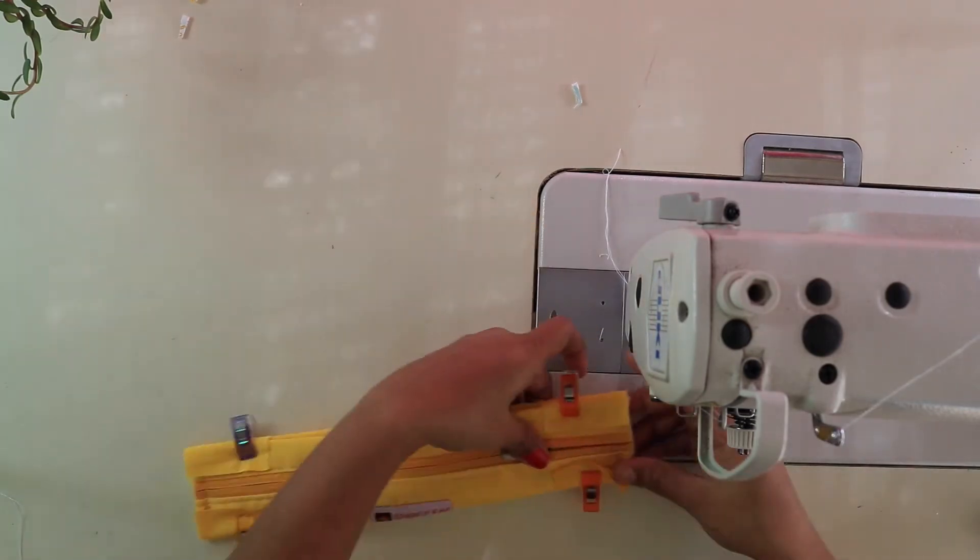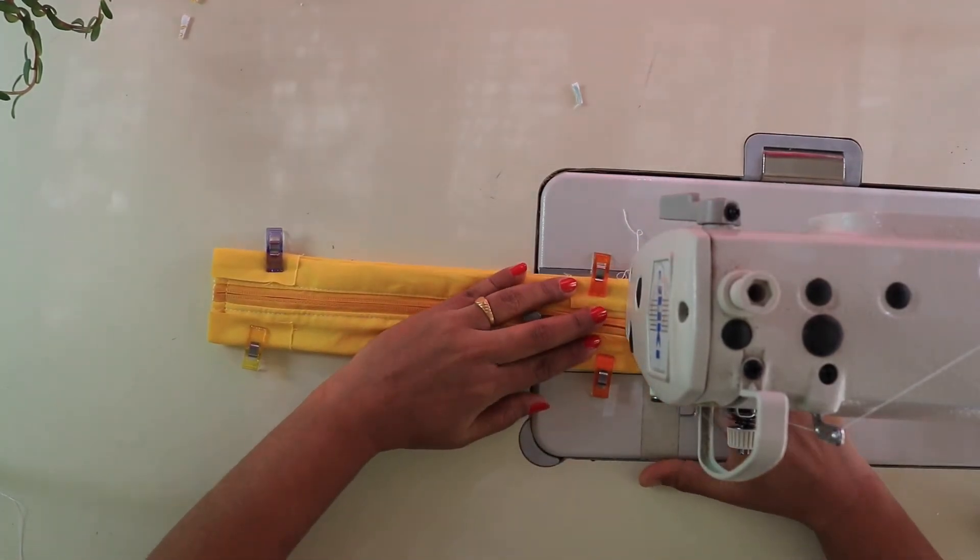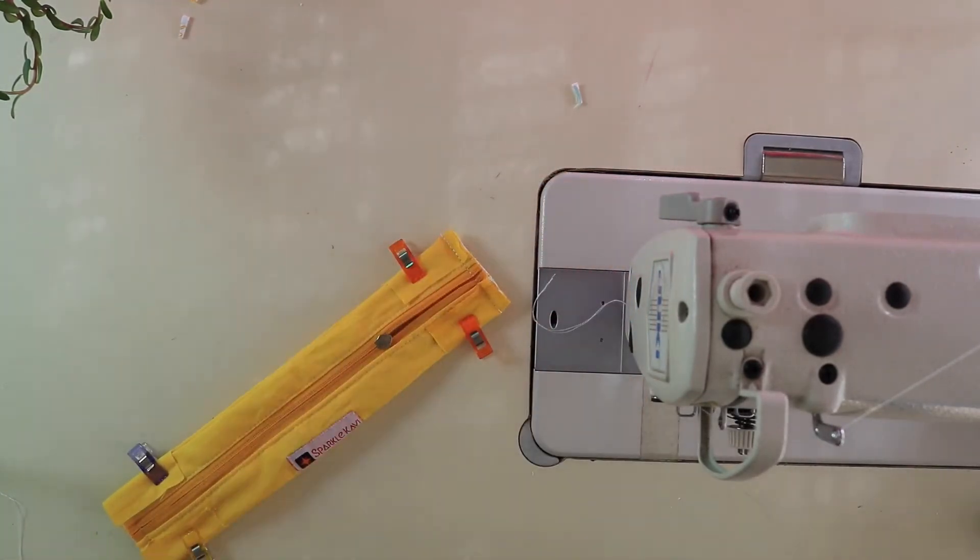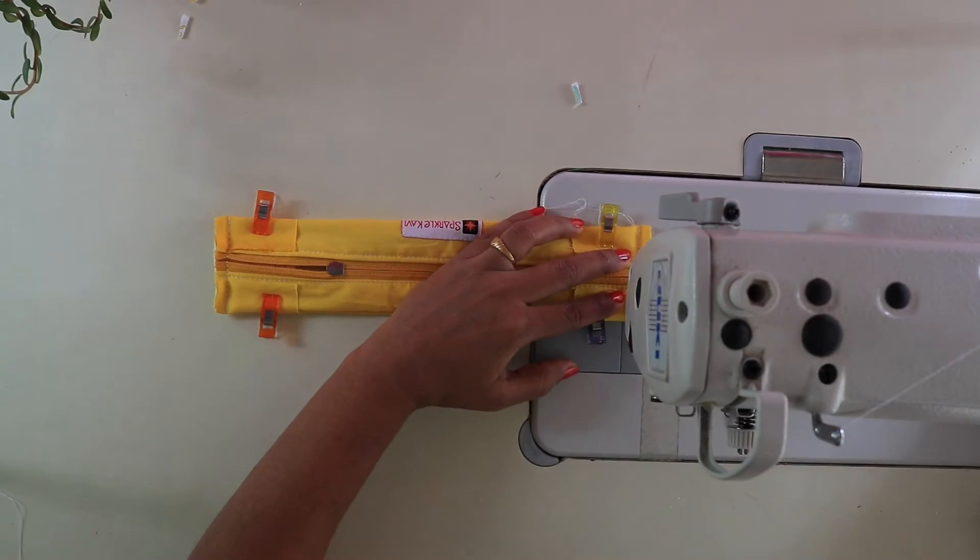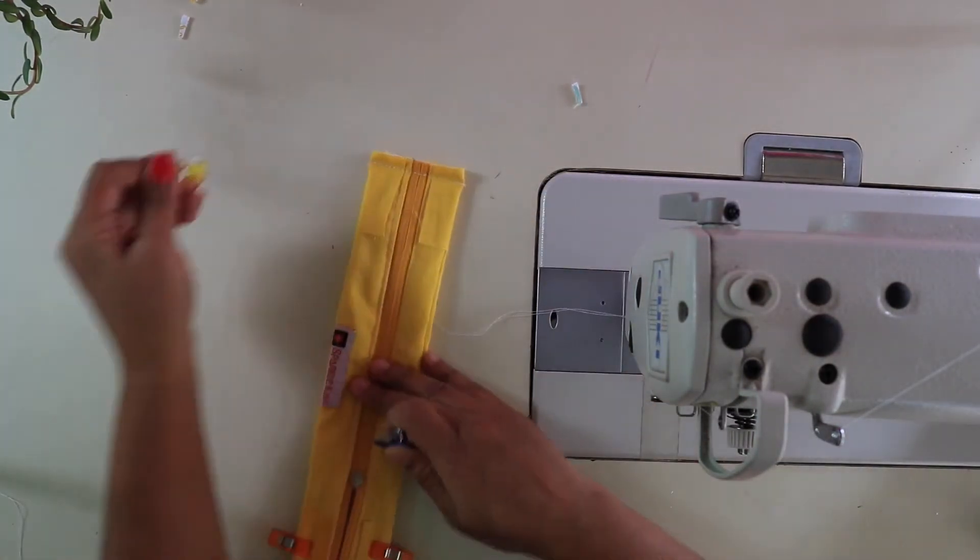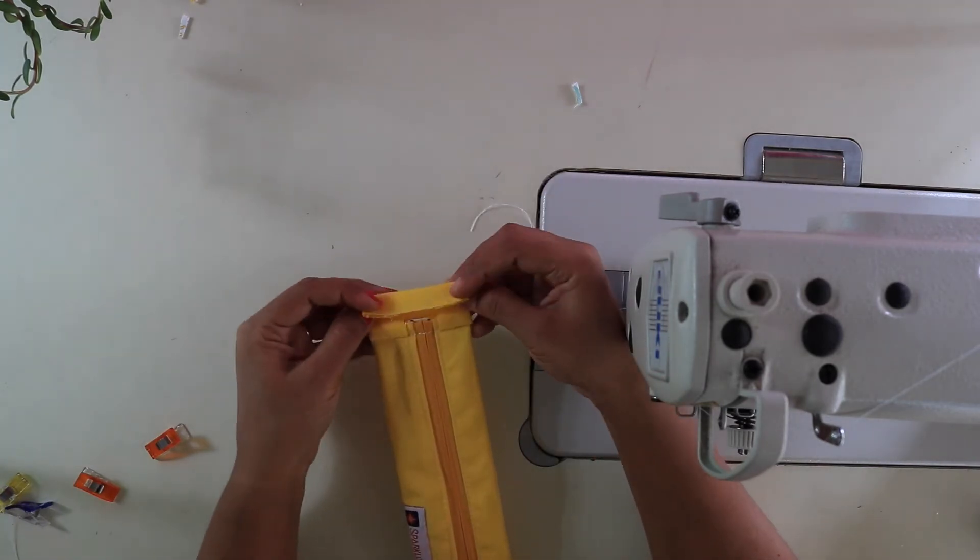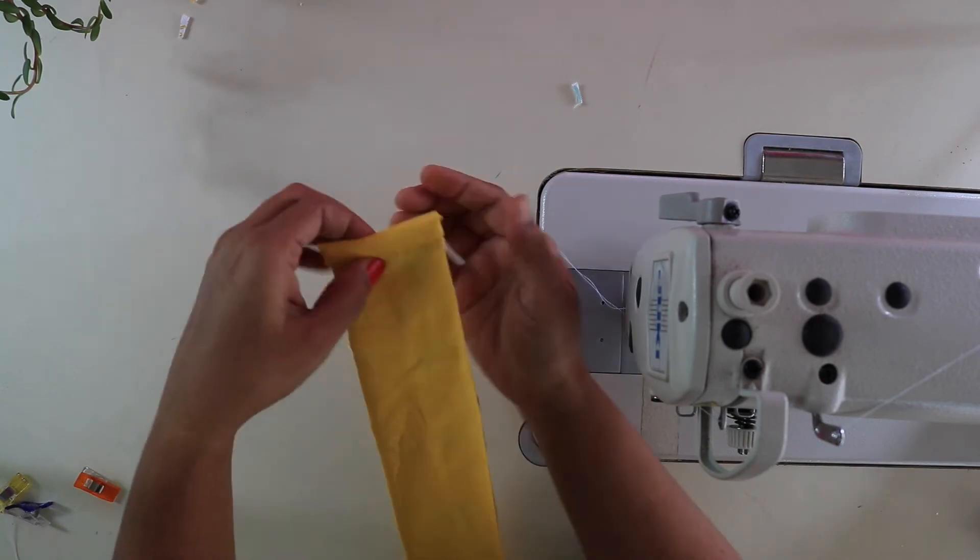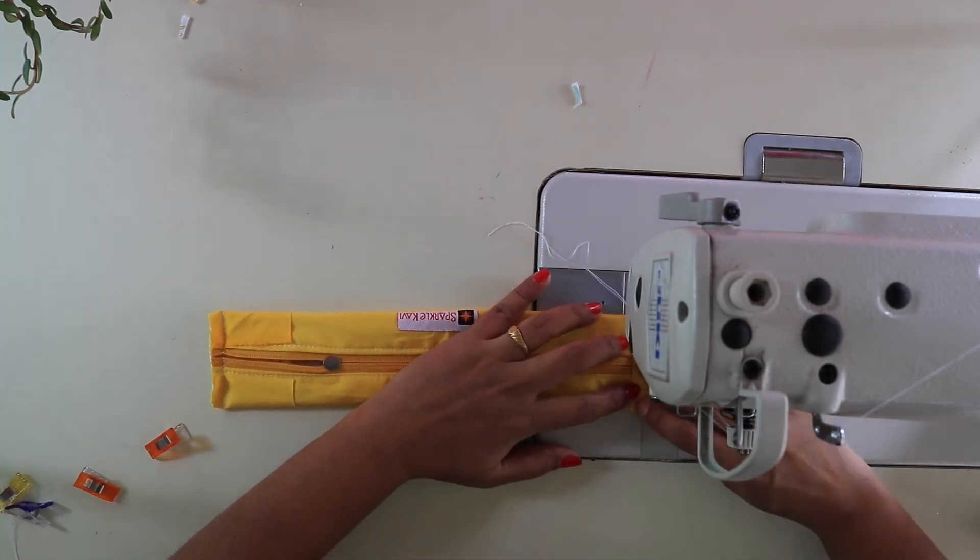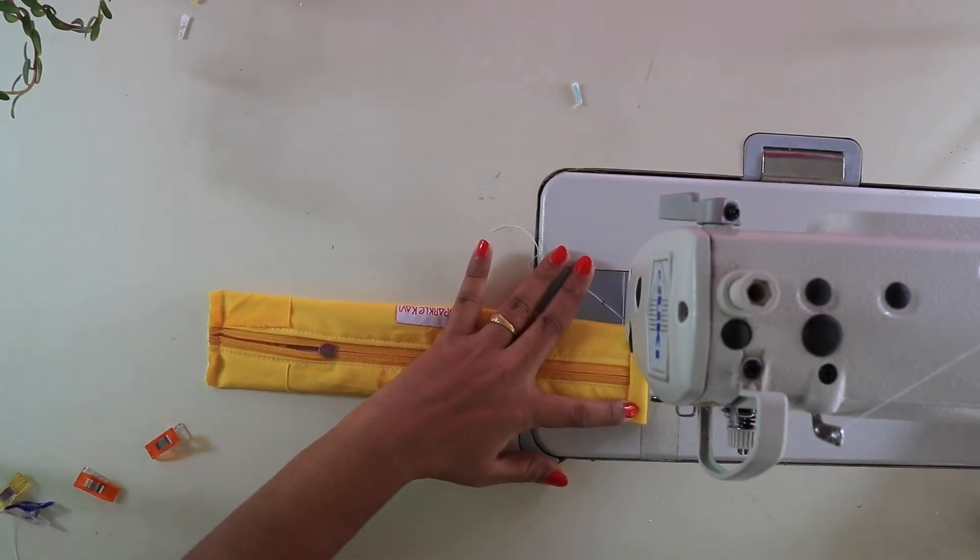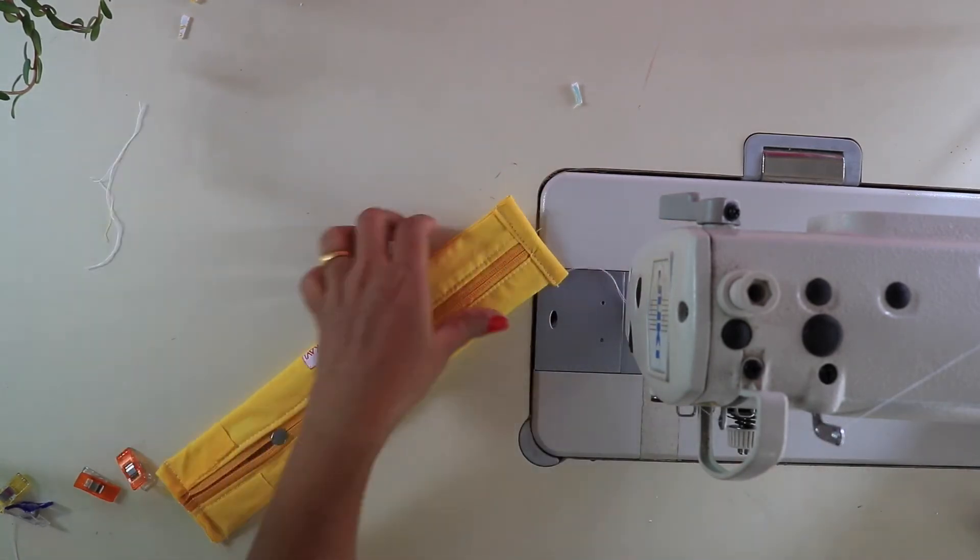And then, make a stitch with quarter inch seam allowance. Now, flip your binding out and fold the binding twice so that all the raw edges will get hide. Clip them and make a top stitch at one-eighth inch away from the edge of the binding. Do the same for the opposite side also.